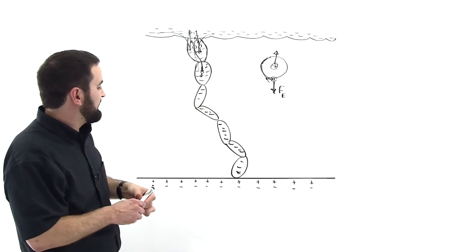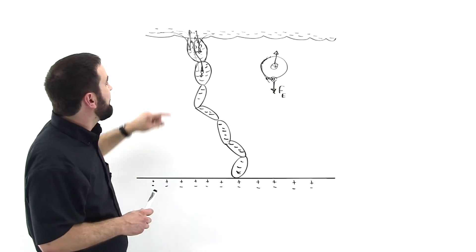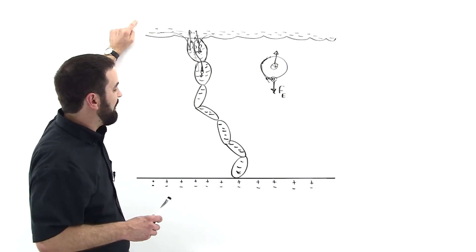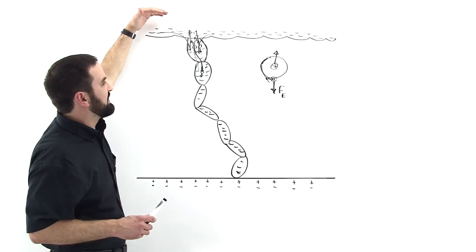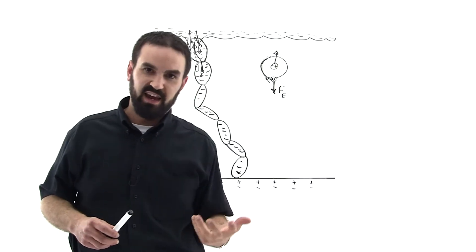Now that this column has connected with the earth, this is a conductive path between the cloud and the earth. So the cloud is going to dump as much charge down that conductive path as it can.